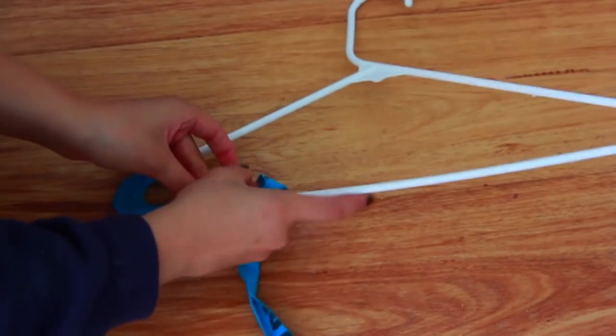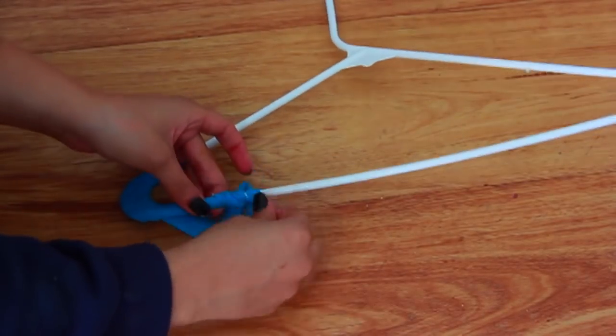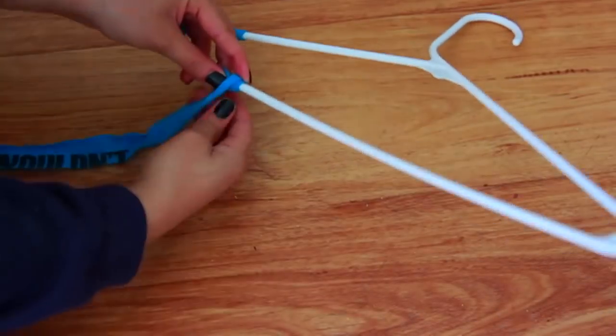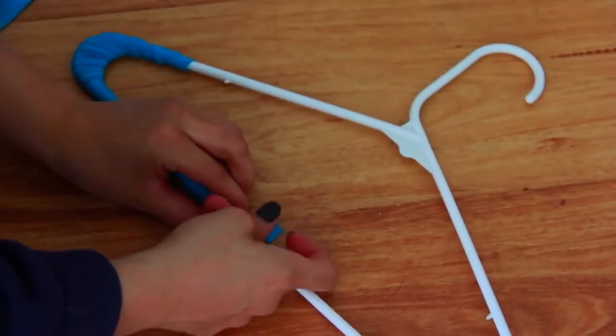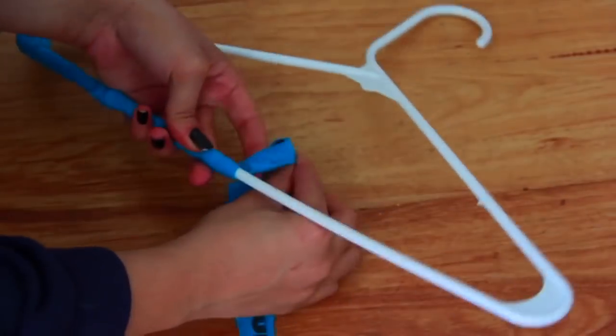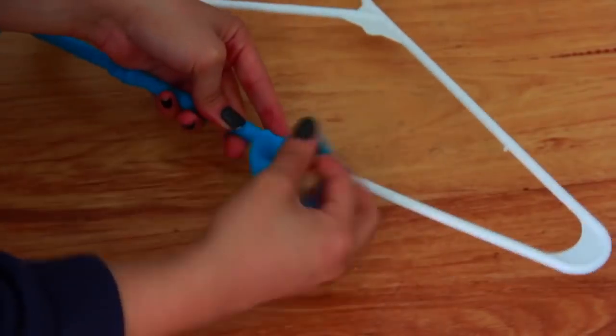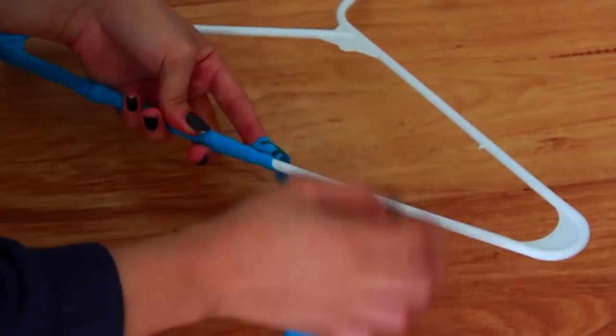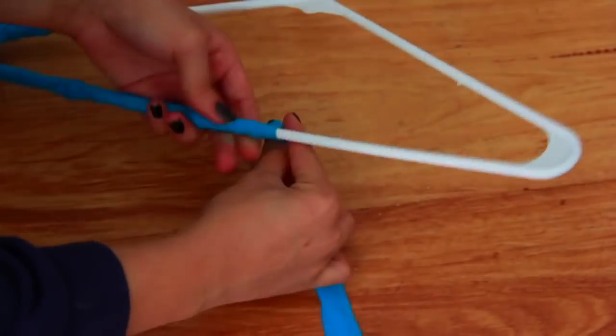Just keep going around and around and around the entire thing until your hanger is completely covered. Even if you don't need like non-slip hangers, when you do this to enough of your hangers—by the way, this takes like I don't know, 15 minutes per hanger I would say.